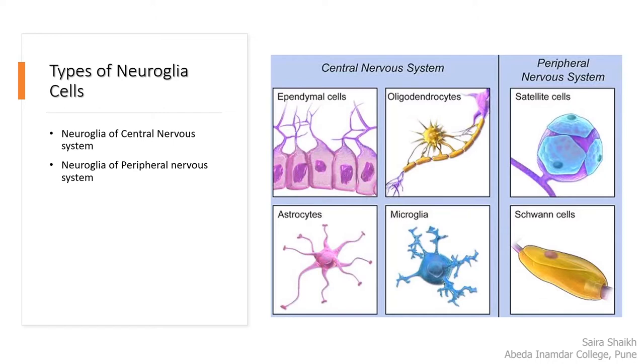While in the peripheral nervous system, two types of glia cells are present: satellite cells and Schwann cells.